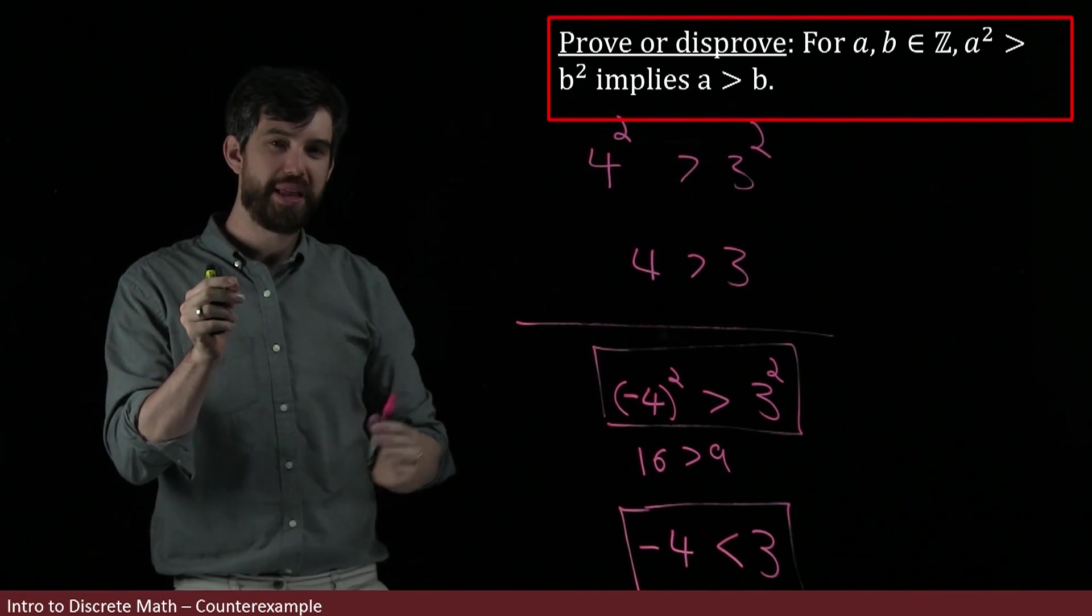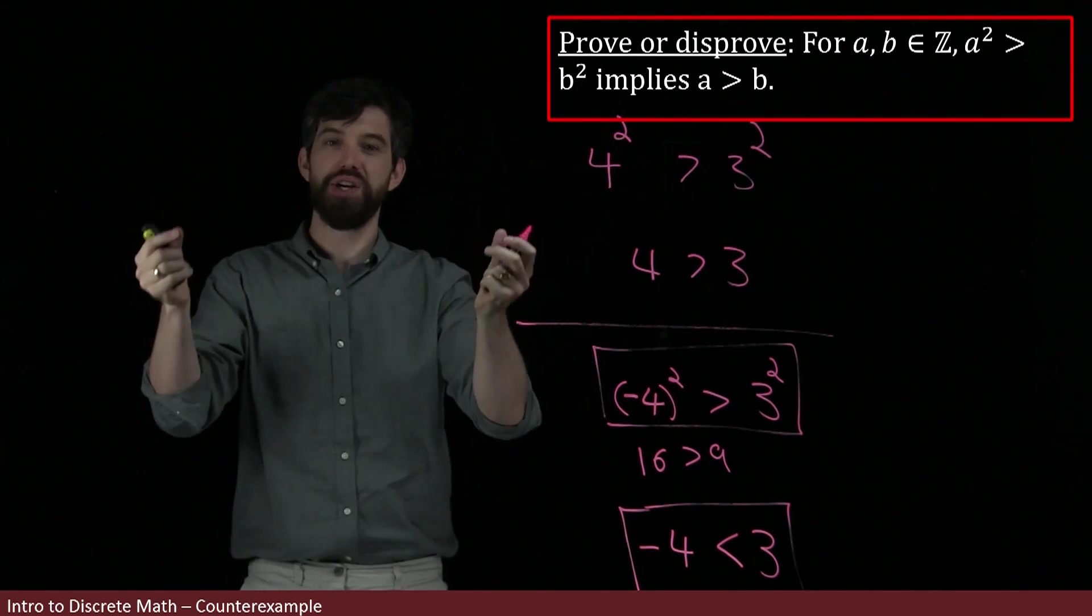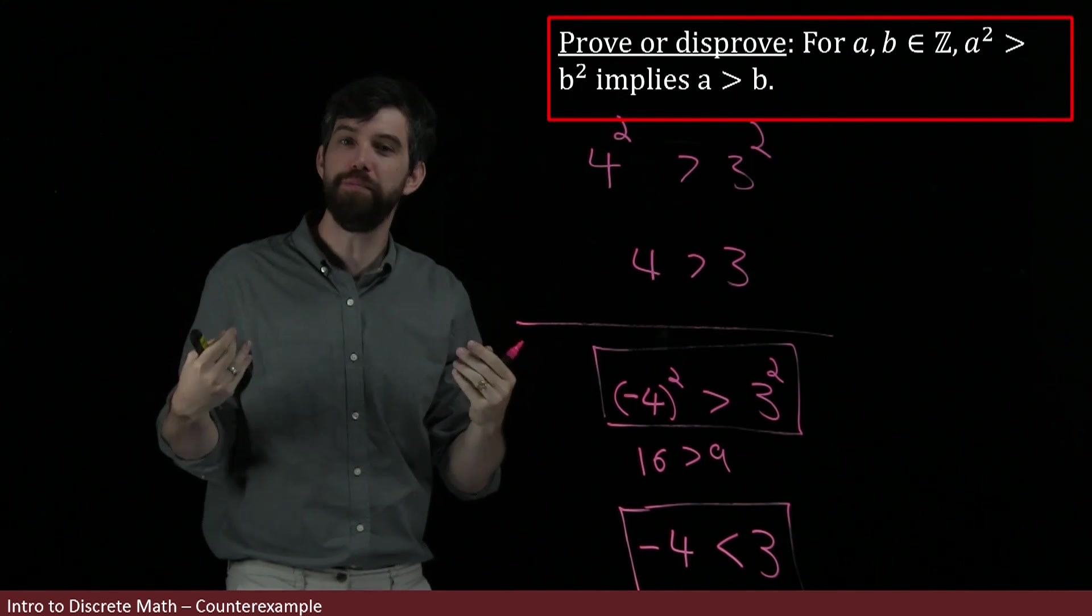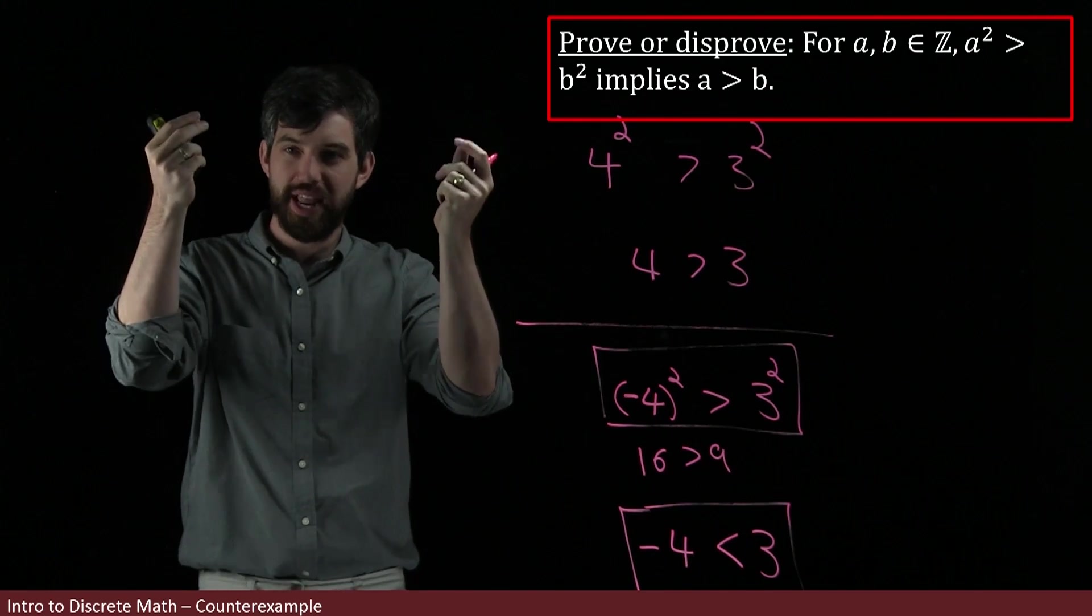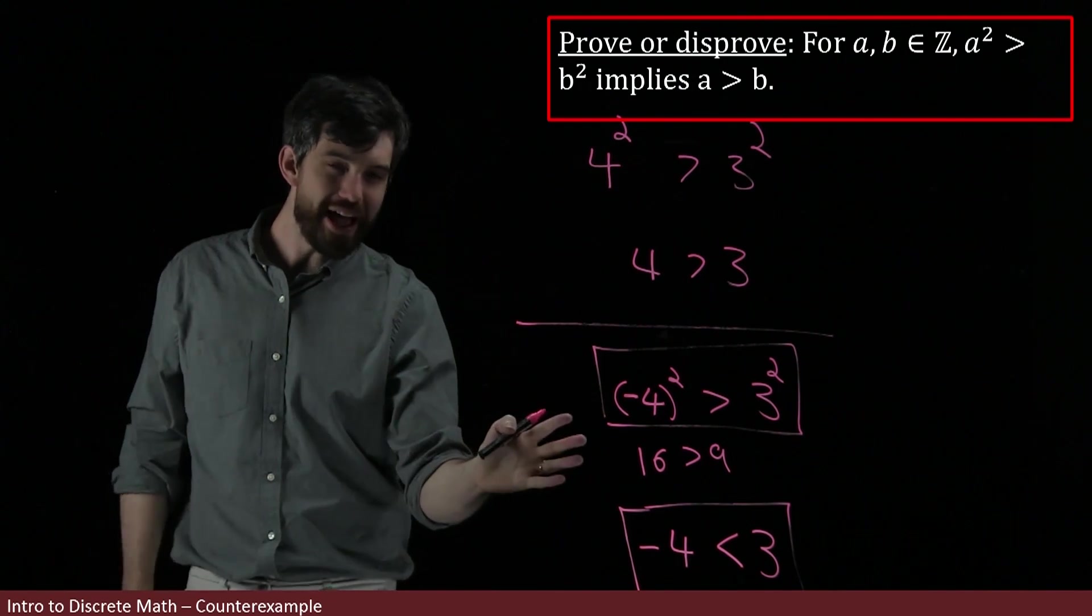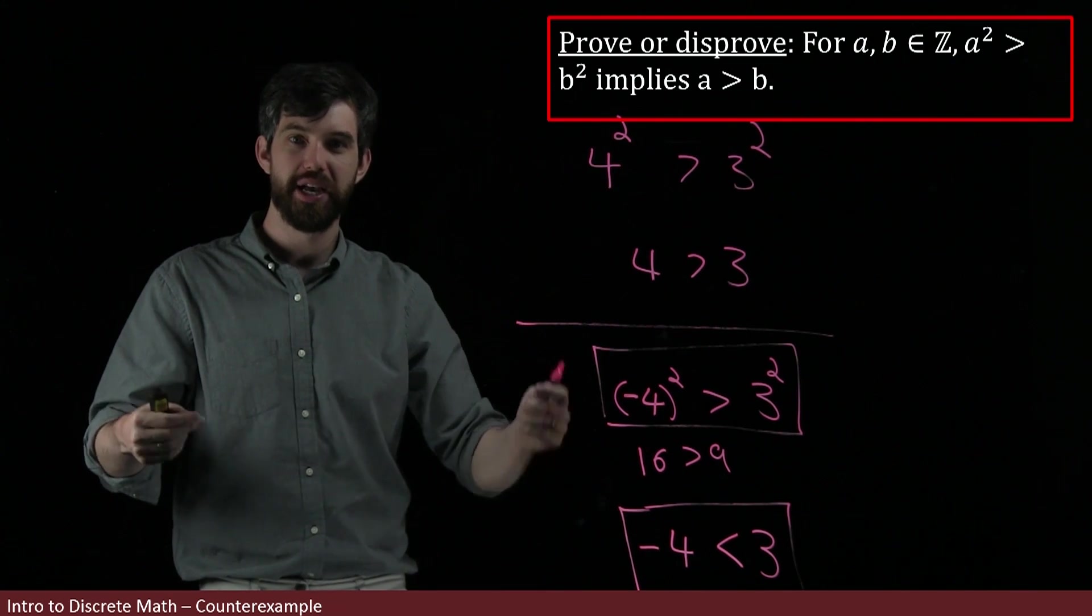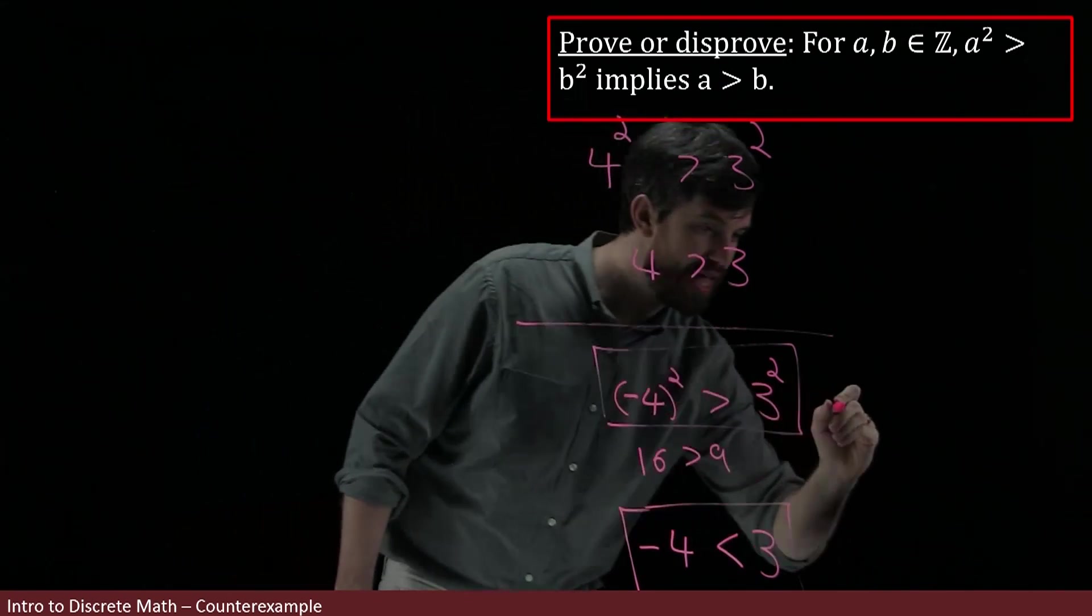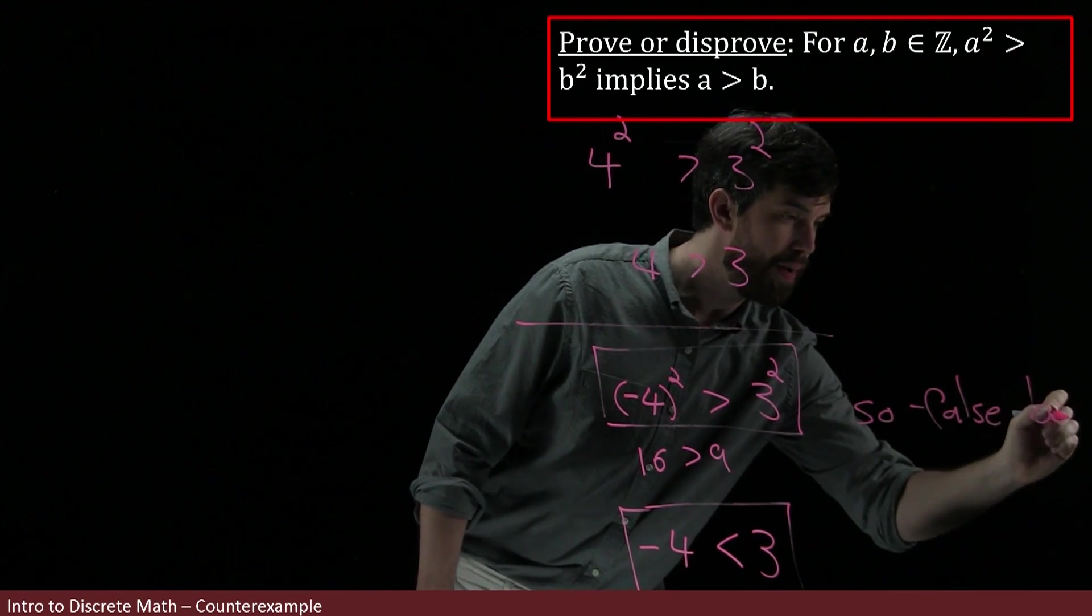And notice that this claim that I have is a claim for every single a and b. The every is not written explicitly here, but it's there implicitly. If I take any generic a and b, it has the property that a squared is bigger than b squared implies a is bigger than b. So, if I have just one so-called counter example to this, the entire theorem is going to be false. So, I'm going to say that I have it being false by counter example.